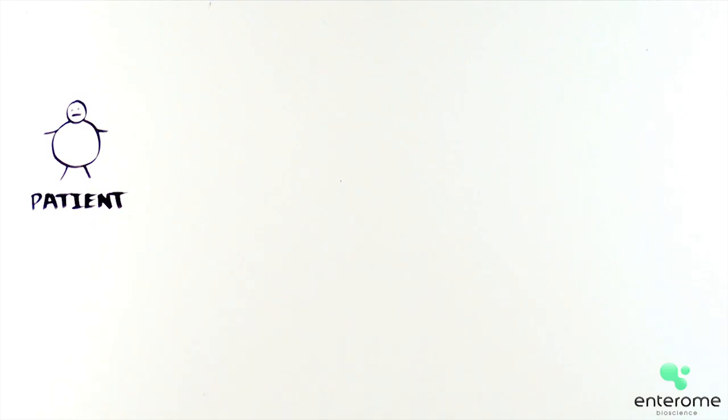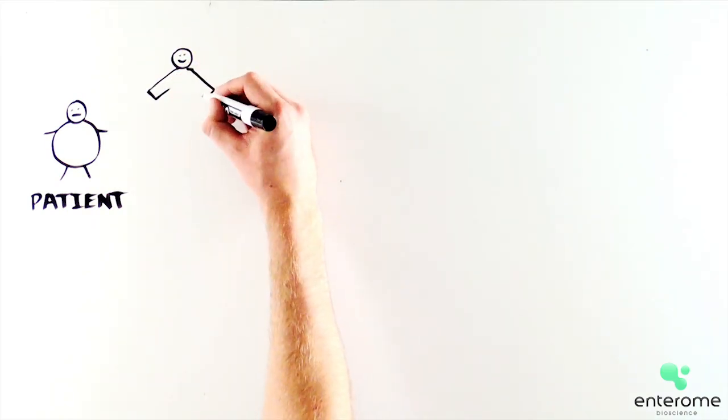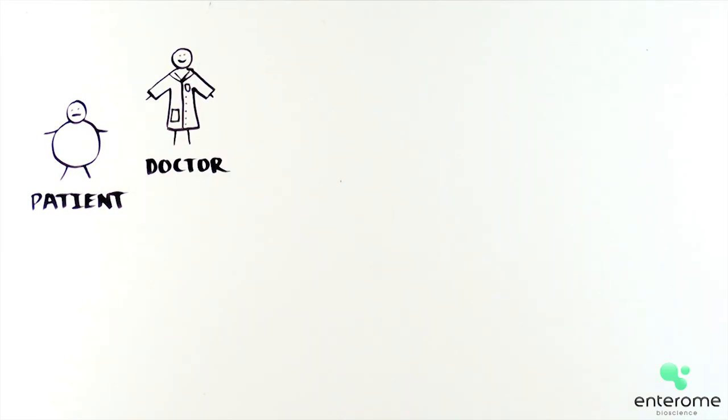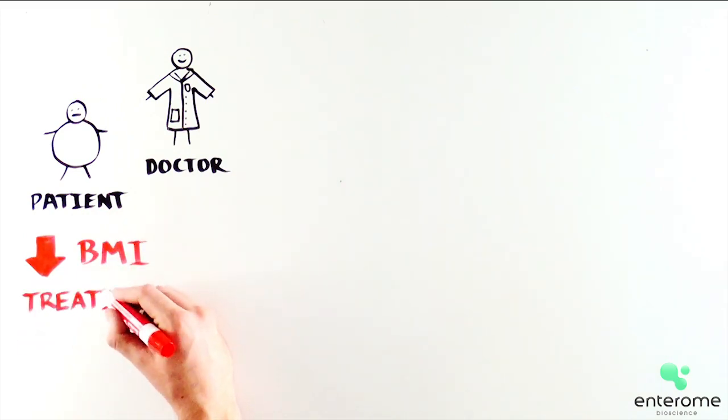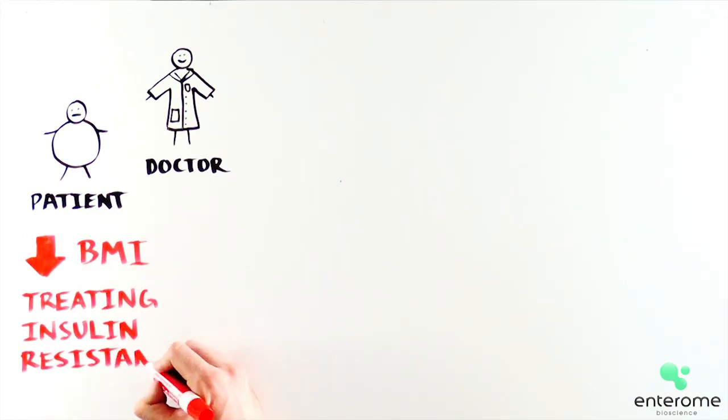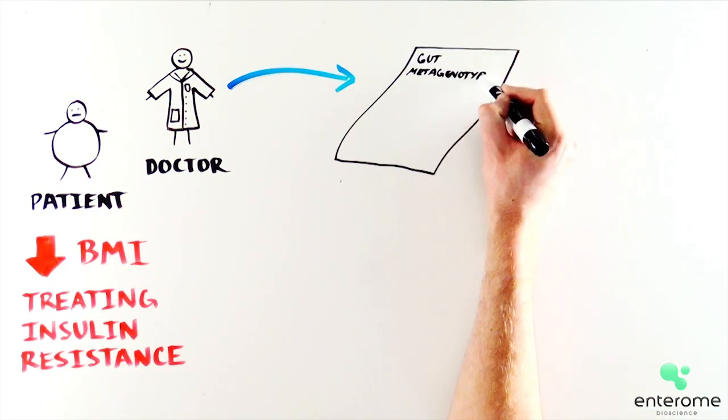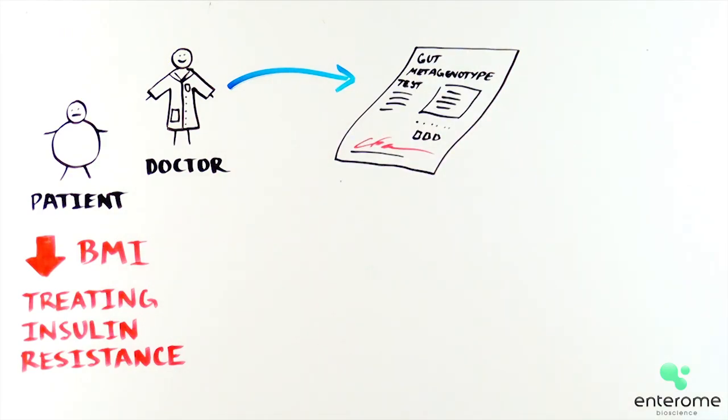In this hypothetical scenario, a patient suffering from obesity sees his doctor to take action to improve his state of health, decreasing body weight, and treating insulin resistance. The doctor prescribes the patient a gut metagenotype test to check his gut microbial richness and to decide the appropriate course of action.